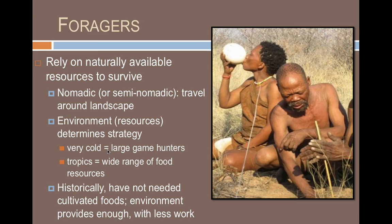The type of environment a group of hunter-gatherers lives in determines the focus of their food acquisition. For groups living in very cold environments, only certain types of foods are available — typically very large animals — so hunter-gatherer groups at cold extremes are typically large game hunters. By contrast, hunter-gatherers in the tropics employ a very wide range of food resources, acquiring many different types of animals and plants. Historically, hunter-gatherers have not needed cultivated foods because the environment provided enough food without requiring farming or raising animals.